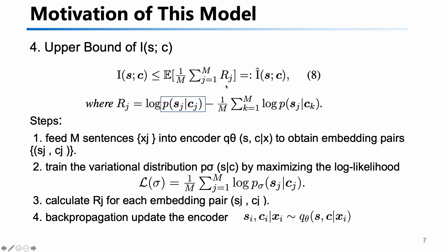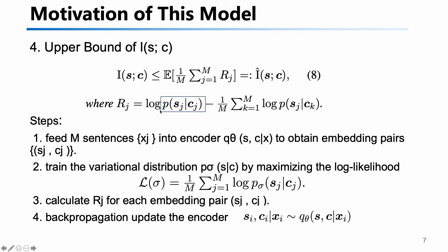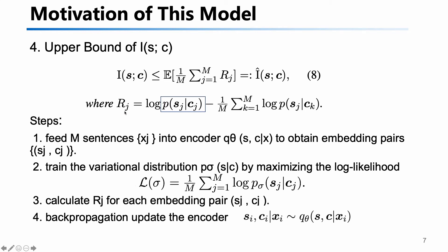The upper bound is like this, and rj is calculated in this way. There is a problem that we do not know the closed form of this item. So what we do is train a network for this item, then do back-propagation, and we can have the explicit result of I(s,c).